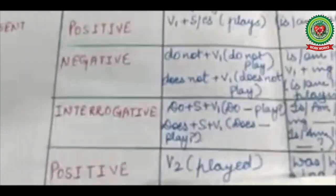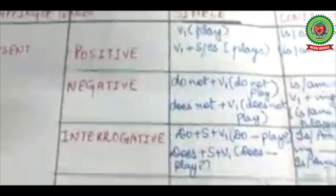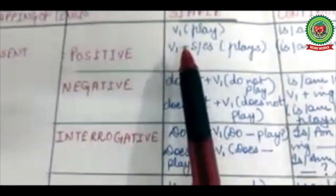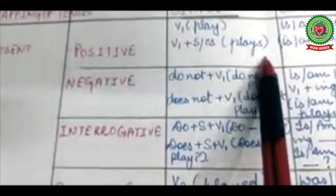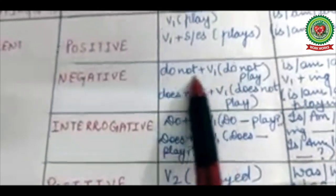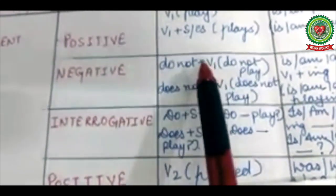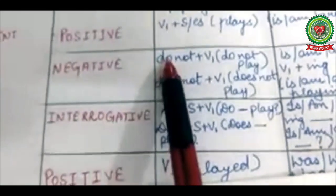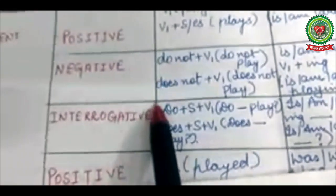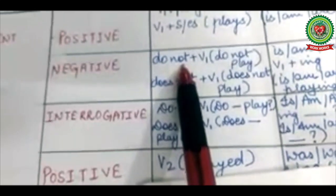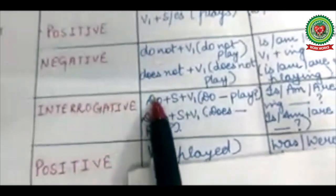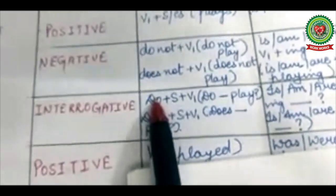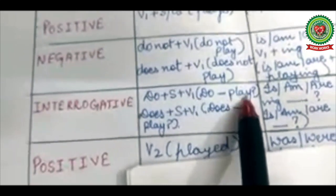Now, coming to the mapping of the tenses. In the present positive tense, the rule is present form of the verb plus S or ES — play or plays. In the negative, since there is no helping verb, we add our own helping verb. The present form helping verbs are 'do' and 'does', and we add 'not' with the helping verb. To make it interrogative, the helping verb comes to the beginning of the sentence and the sentence ends with a question mark.